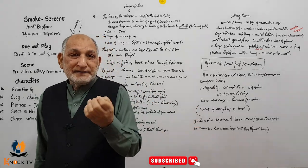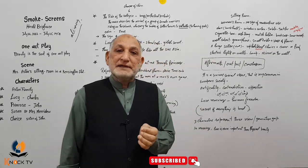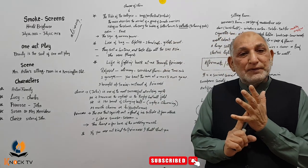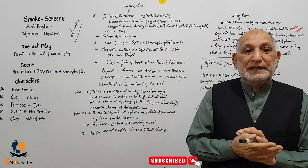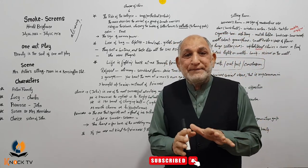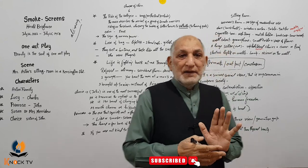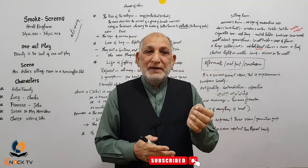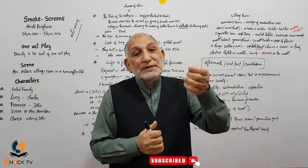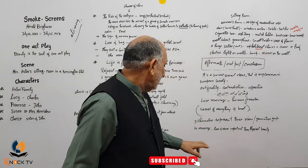ایک اور theme ہے: excess of everything — جب کسی کو زیادہ آزادی دیتے ہیں تو یہی نکلتا ہے۔ Susan، Lucy، اور Primrose تینوں الگ الگ طریقے سے اپنی زندگی deal کرتی ہیں۔ جو Lucy کی ماں ہے وہ ایک working lady اور modern smoker ہے، شہر کی زندگی promote کرتی ہے۔ Susan گاؤں کی زندگی promote کرتی ہے — یہ contradiction بھی smoke screen کا حصہ ہے۔